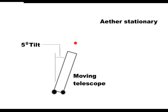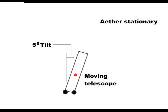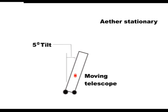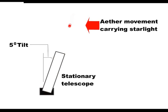Let us assume that the telescope was moving at 5 mph and had to be tipped 5 degrees. This 5 degree tipping, however, could equally be caused by the ether moving at 5 mph carrying the stars around the Earth.